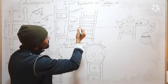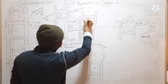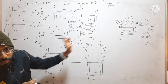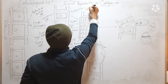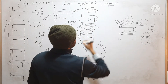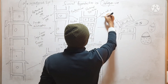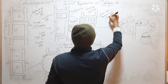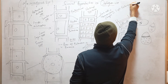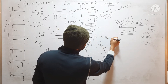Each antheridium in this row further divides by a vertical wall. They will divide vertically, and each antheridium forms 2 cells. Each of these cells will finally metamorphose, or you can say change, into a single antherozoid. So each antheridium will form 2 antherozoids.